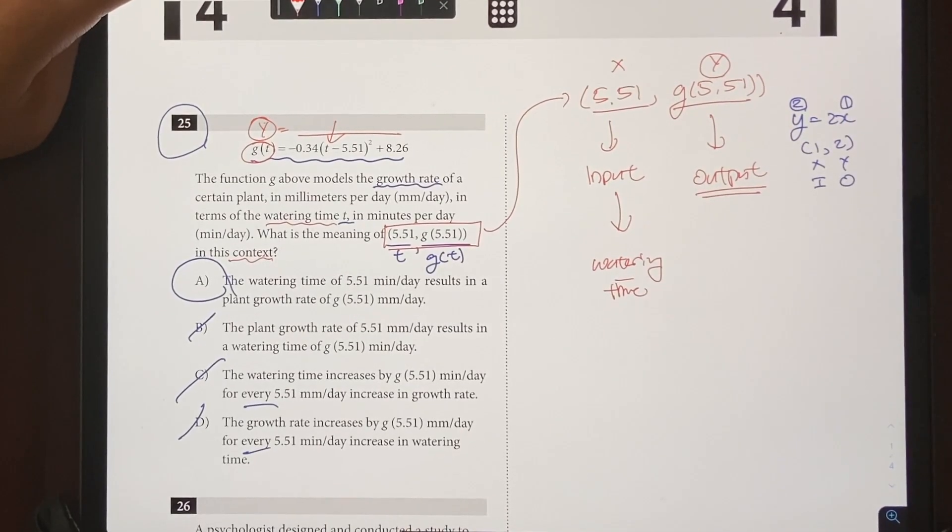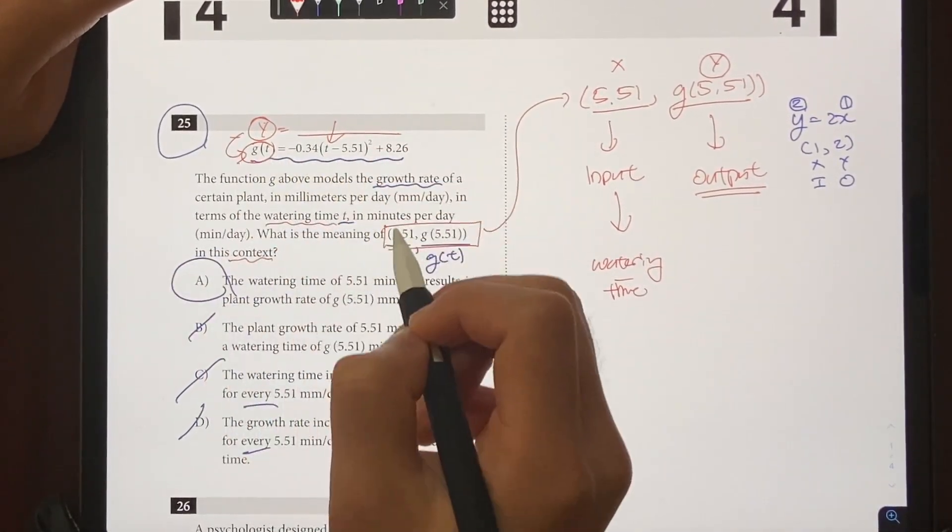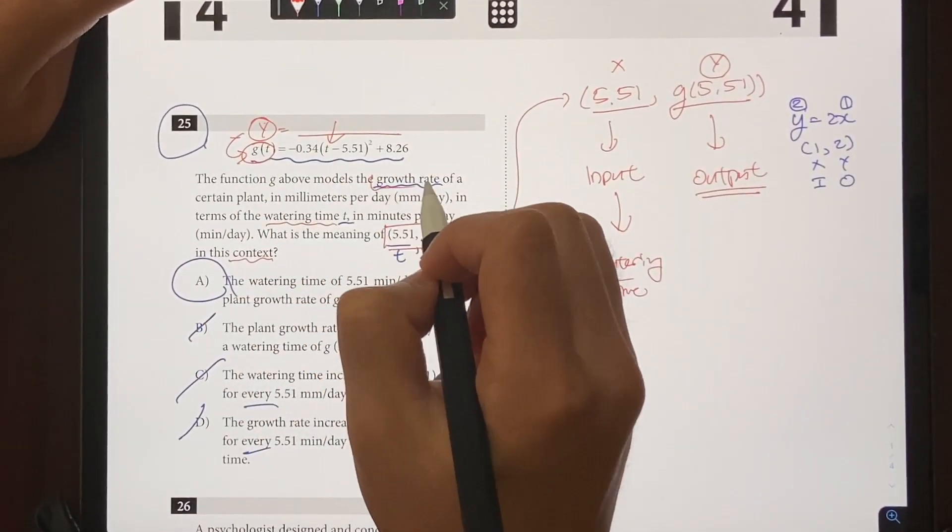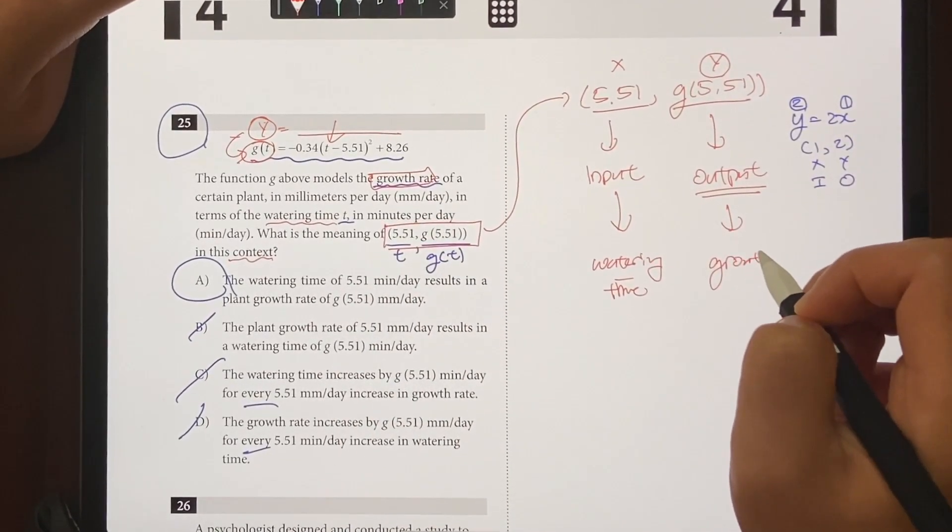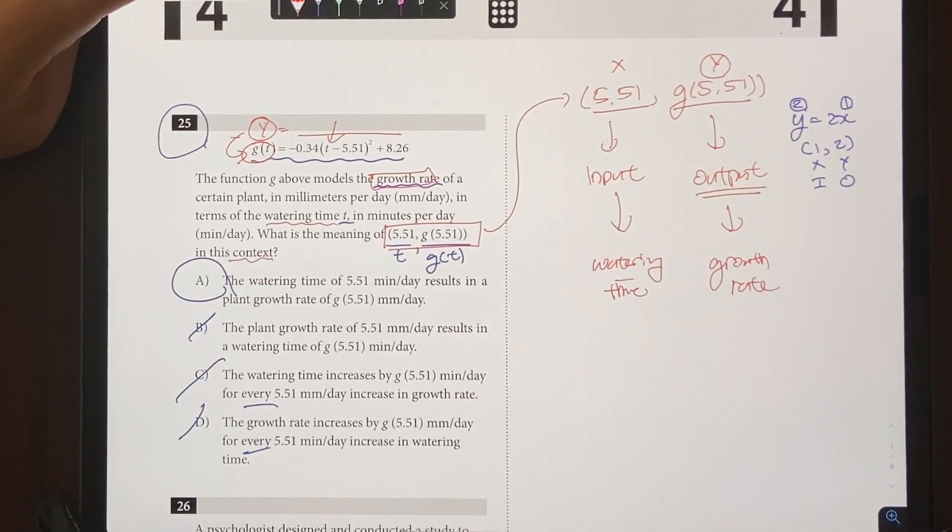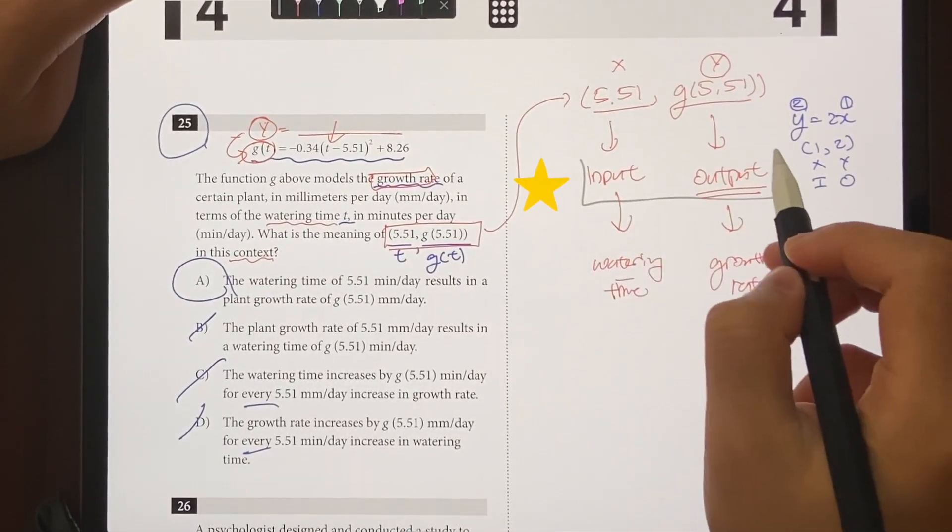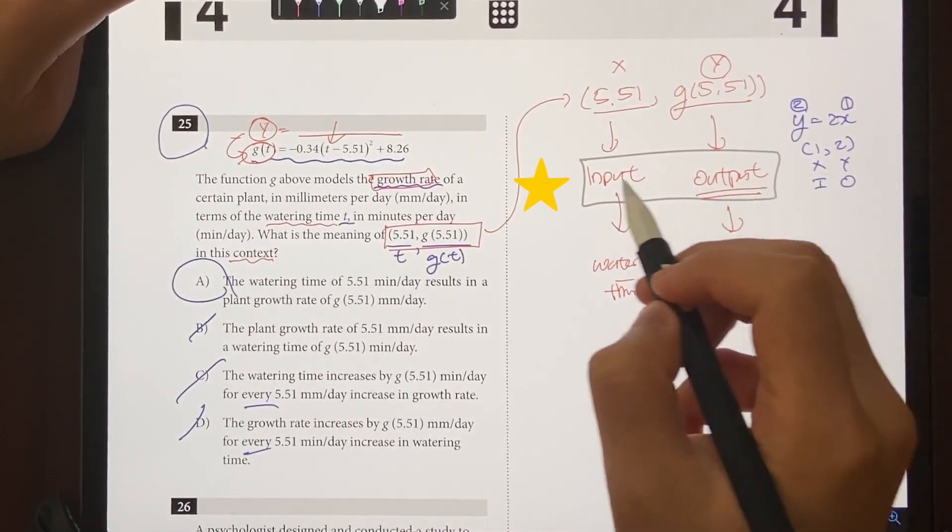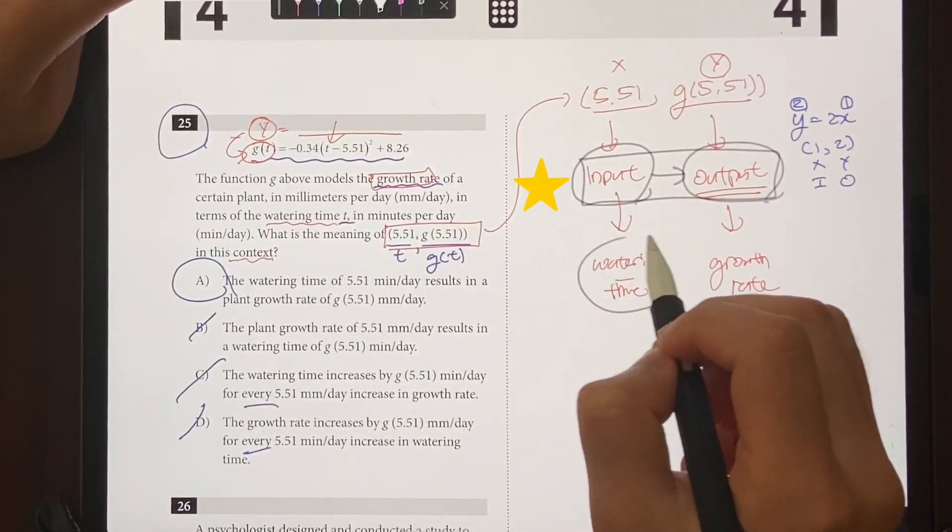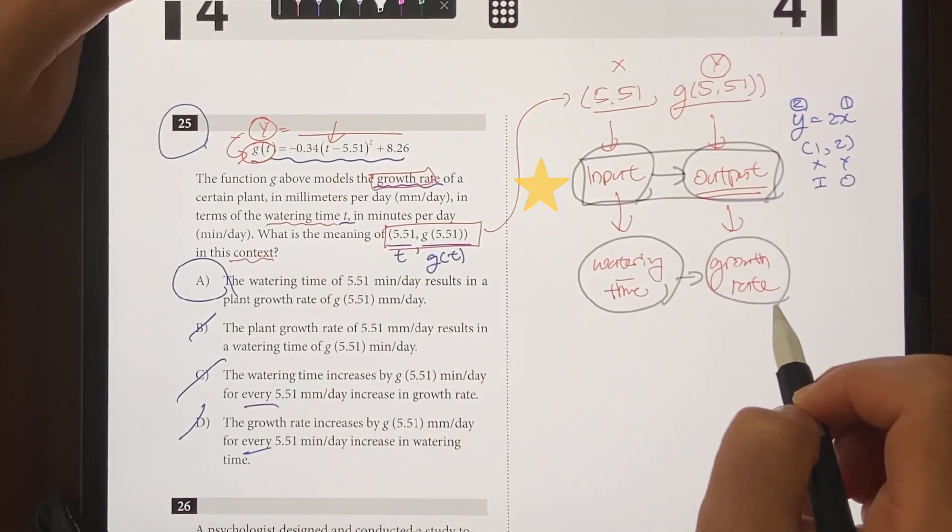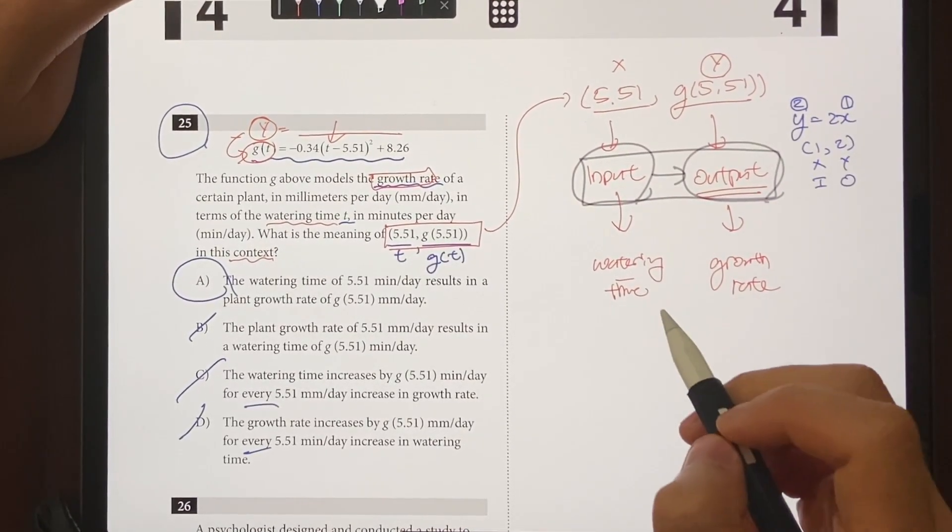And what does the y value or the g represent? It represents the growth rate, which means your output is going to be represented as growth rate. And what's important here is for you to understand this relationship: input, output. This is what is causing this to happen, and in this context that means watering time is causing the growth rate. And all we have to do now is put it together.